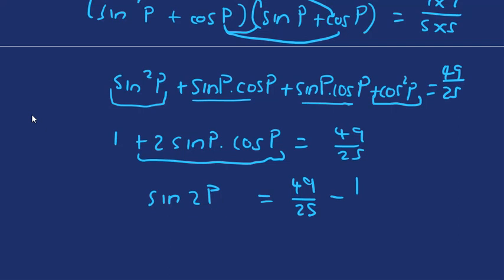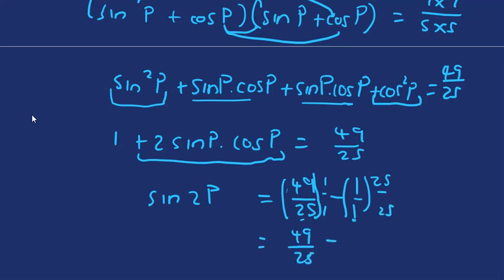So we've found sine 2p. All that's left is to simplify the right-hand side. Squaring seven over five gives 49 over 25, so we have sine 2p plus 1 equals 49 over 25. To subtract 1, we write it as 25 over 25. So sine 2p equals 49 minus 25 over 25, which gives us 24 over 25. That is our solution.